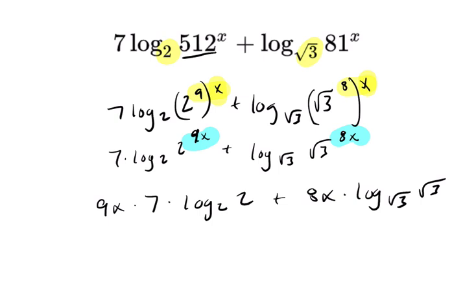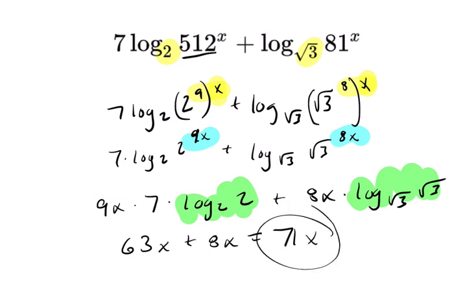And what's nice now is that these two things are just 1: 2 to the 1st is itself, and the square root of 3 to the 1st is itself. And you get 63x plus 8x, and that's 71x. All right, hope that helped.